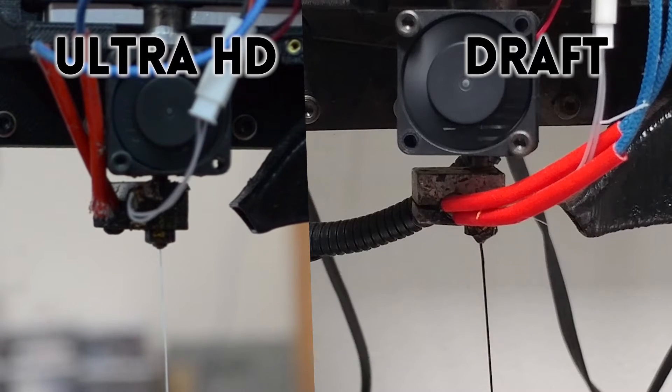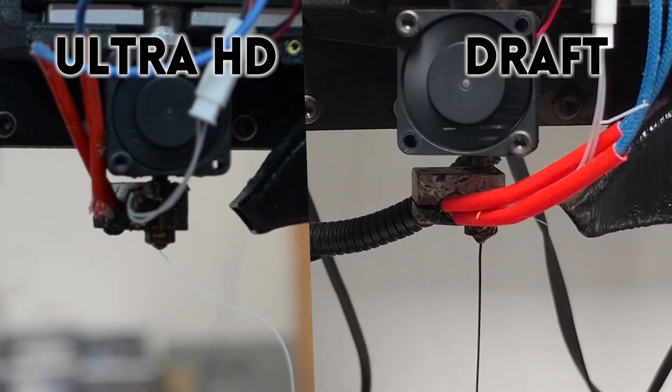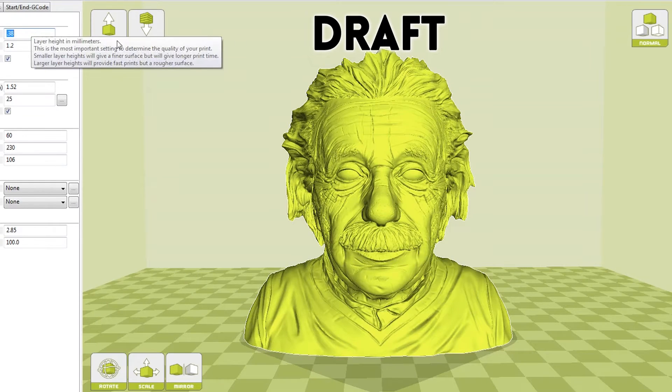As we went over in our designing for 3D printing video, we use three different nozzle diameters. 0.6mm for draft resolution, 0.4mm for standard and fine resolution, and 0.25mm for Ultra HD resolution. Our draft resolution has layer heights of 0.4mm.